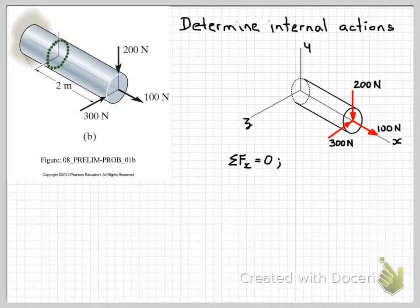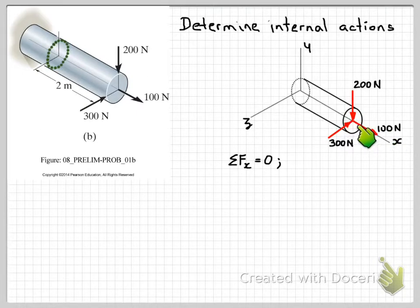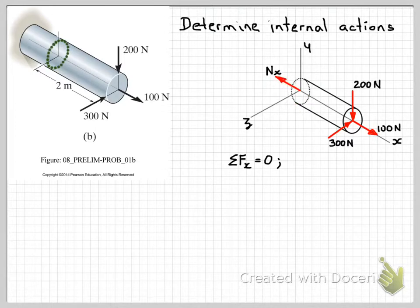Here we'll look at the sum of forces in the x direction. Note that on my diagram I've indicated what x is, and also of course y and z directions. Taking the sum of forces in the x direction equals zero, we can see on our diagram that we have a 100 Newton force in the x direction, and that's all we have. So on our internal section we must have an internal equal and opposite force Nx. We can write that equation out: Nx is equal to 100 Newtons.